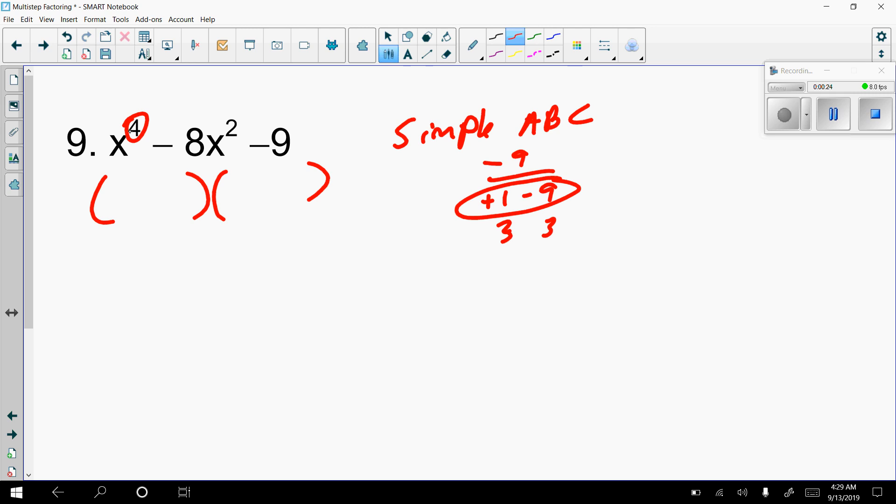So whatever this exponent is, we just split it in half. So x squared goes here and x squared goes here. And then I'm going to put the plus 1 and the minus 9.